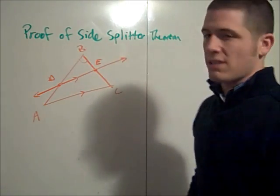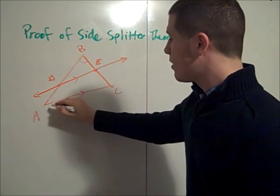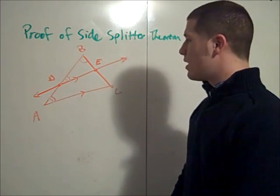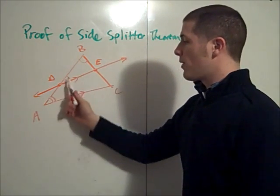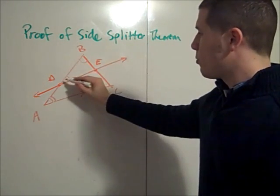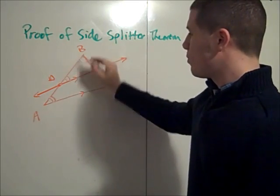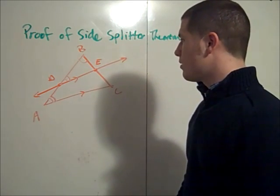And that's because angle B is congruent to itself by the reflexive property of congruence and angle A is congruent to angle BDE by the corresponding angle postulate. If I have two parallel lines cut by a transversal then the corresponding angles are congruent. Therefore we have triangle BDE similar to triangle BAC by angle angle.